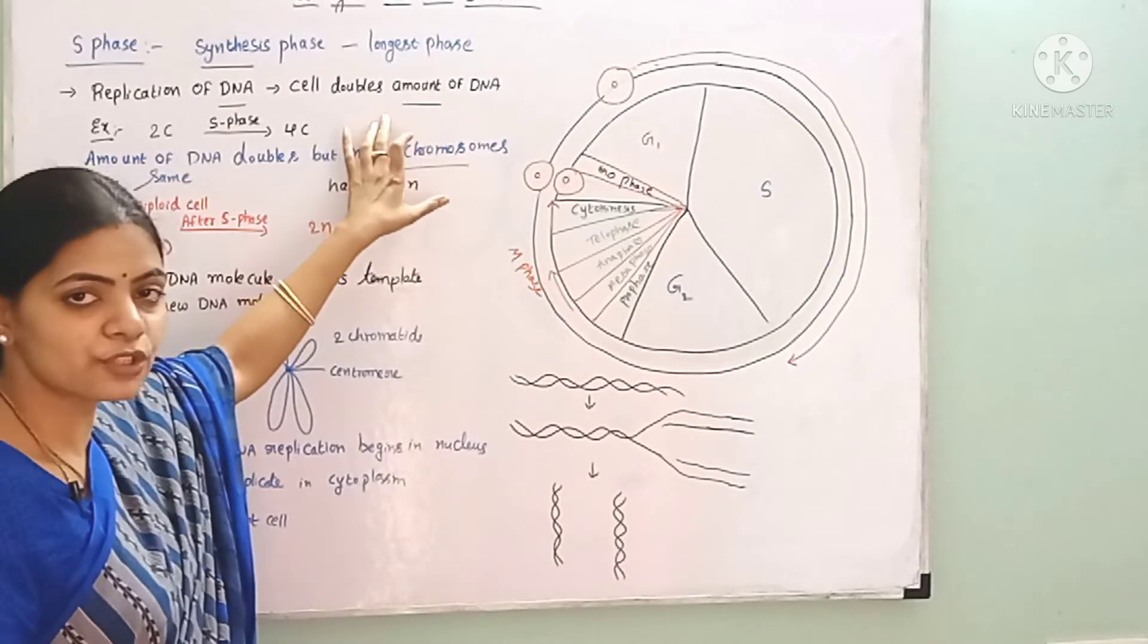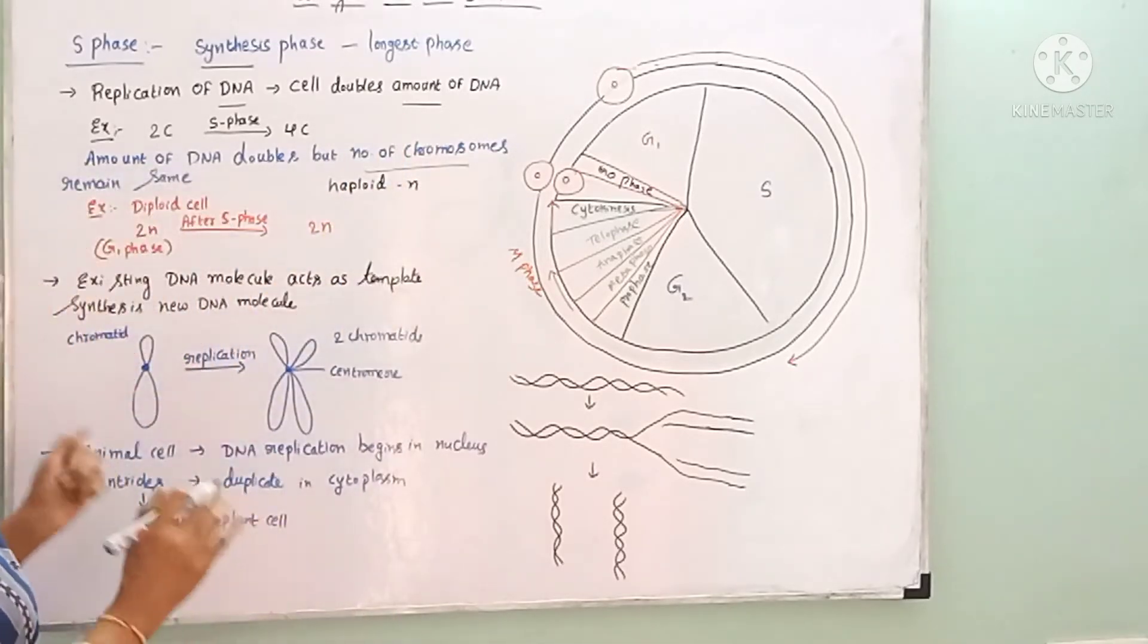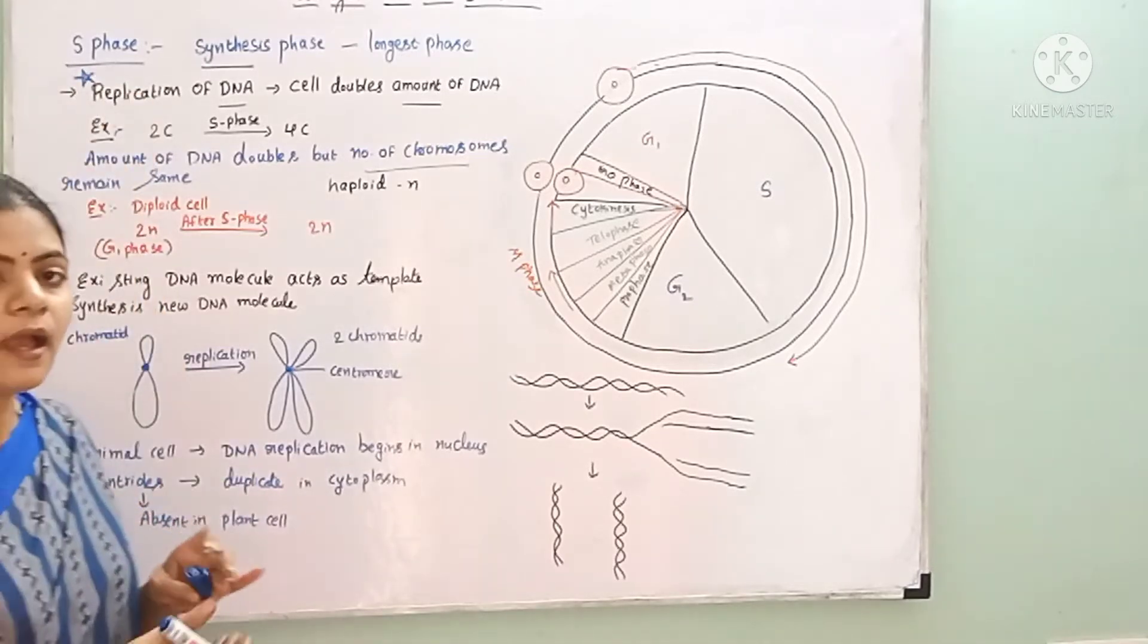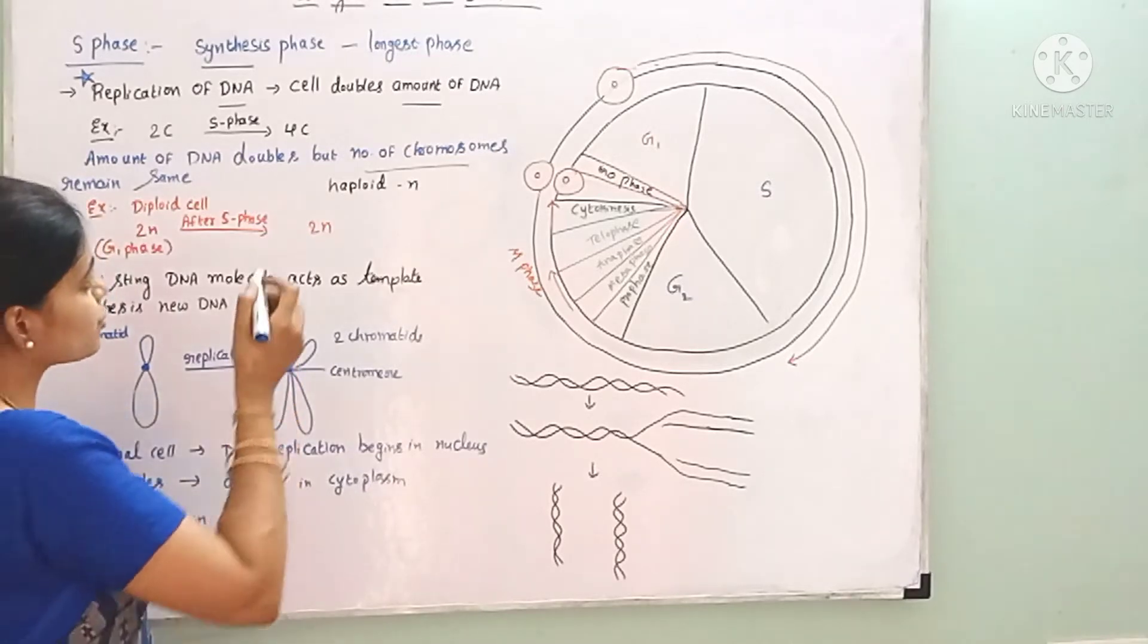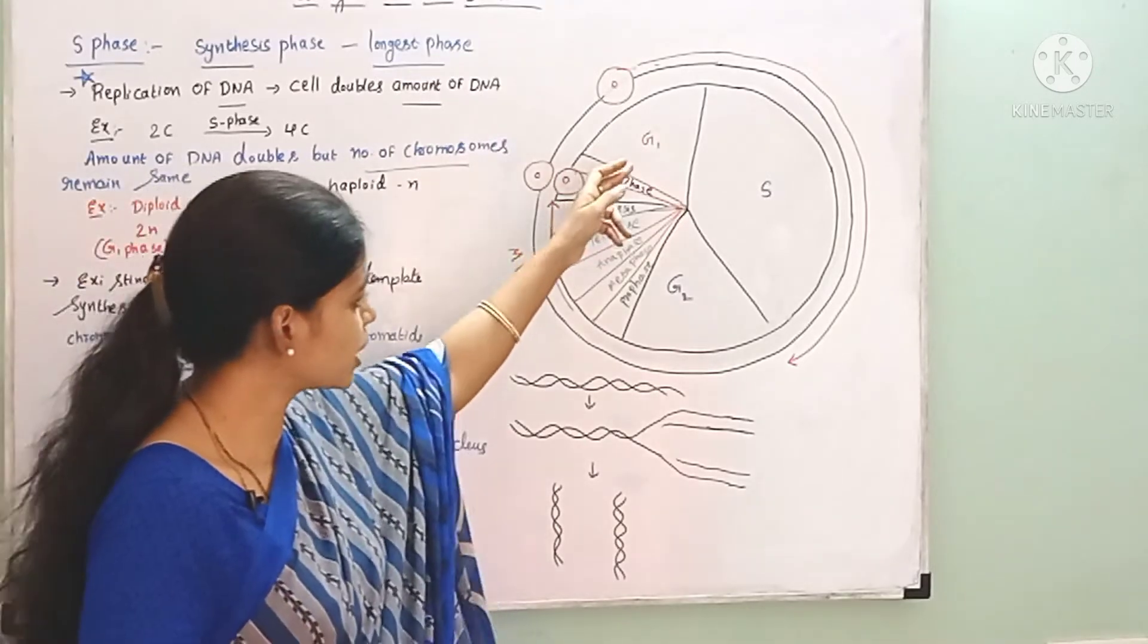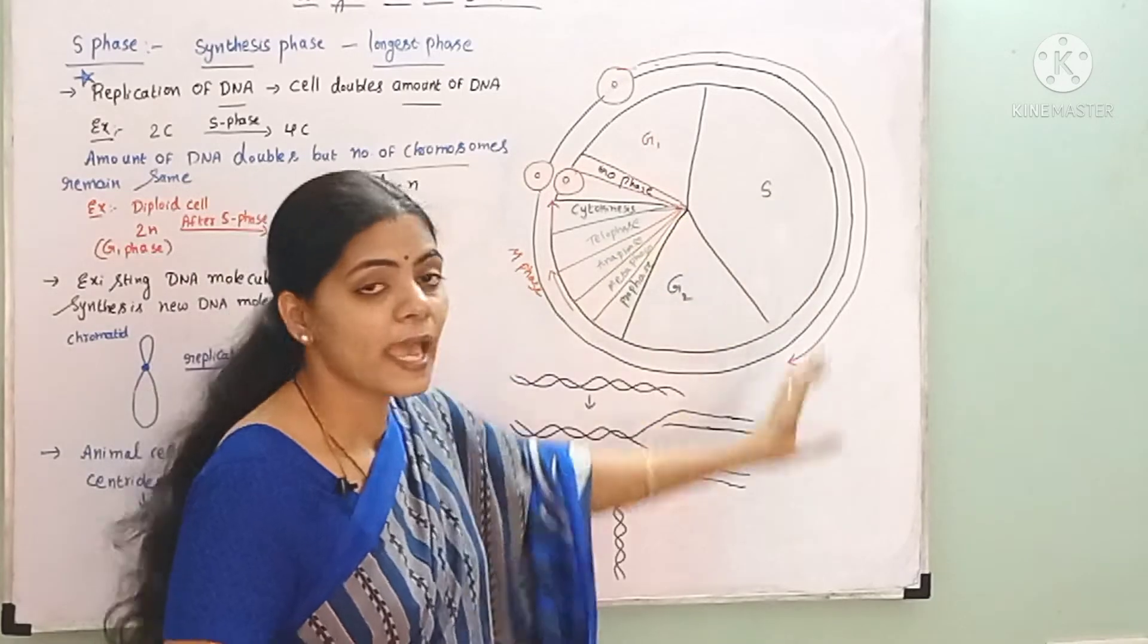In S phase, replication of DNA occurs and the amount of DNA gets doubled. S phase is the longest phase in the cell cycle.